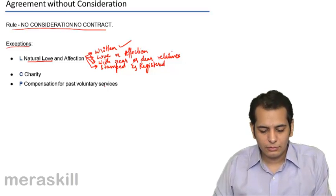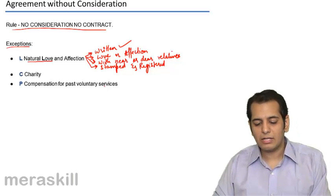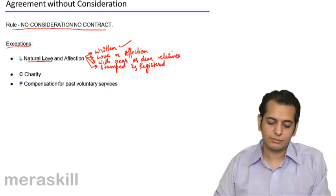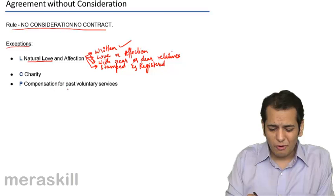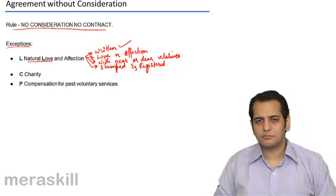The next point is compensation for past voluntary services. Compensation for past voluntary services. What does this mean?